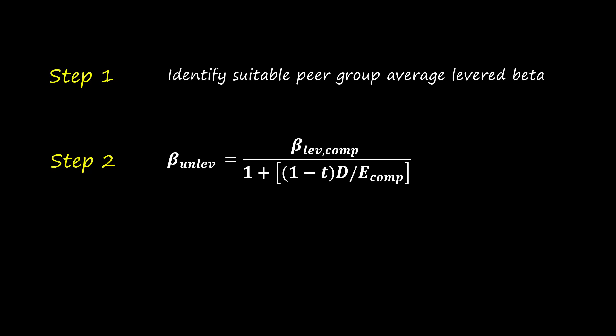And finally, step 3 is to re-lever the peer group unlevered beta using the DE and tax rate of the unlisted company.